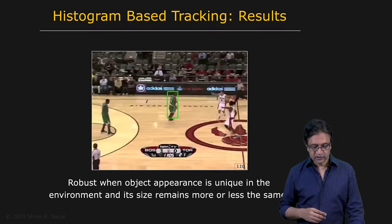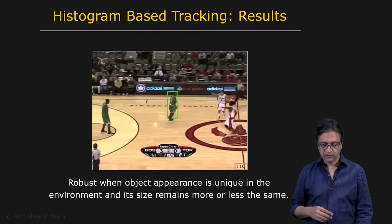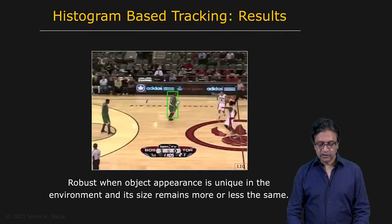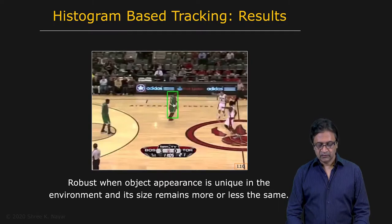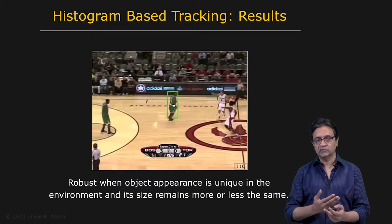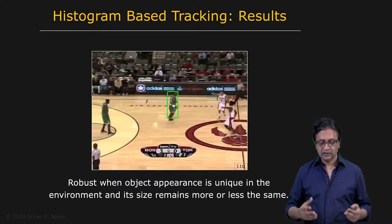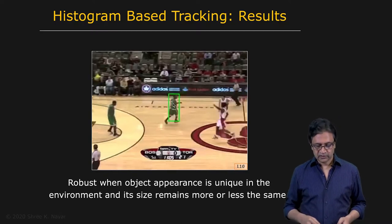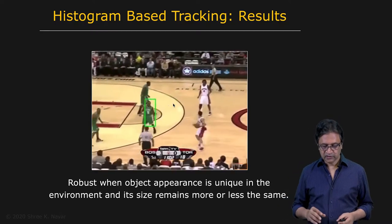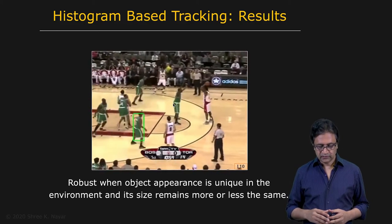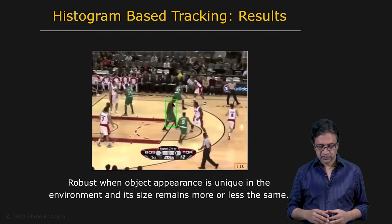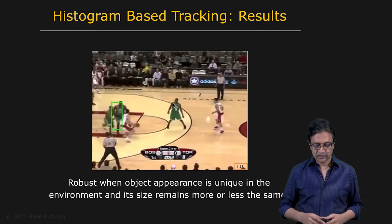Let's see how well this works in a sports scenario. You have a region of interest around a player, and you can observe the pros and cons of histogram-based tracking. When this person crosses somebody with a similar uniform — a teammate — the region of interest sometimes gets passed on to the other person. Everything works fine initially, but when he gets close to one of his players, the tracker latches on to somebody else.